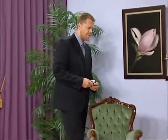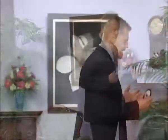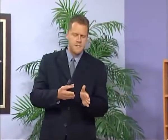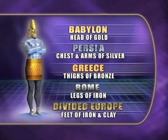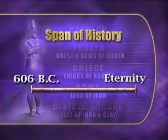We looked at Daniel 2 and went through the statue, analyzing its various elements. We started off with the head of gold in King Nebuchadnezzar's dream, then the chest of silver, the thighs of bronze, and the legs of iron. Each one represented a different kingdom: the head of gold being Babylon, the chest of silver being Medo-Persia, the thighs being Greece under Alexander the Great, and the legs of iron being the iron monarchy of Rome. This spanned a period of time from 606 BC into eternity.